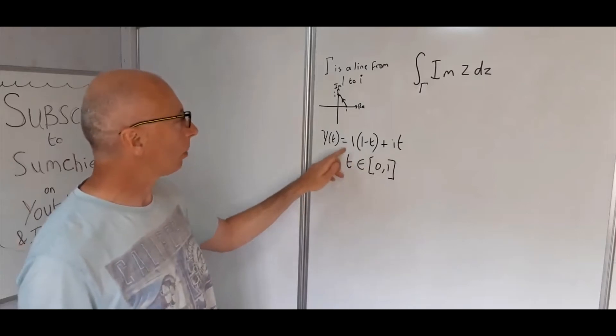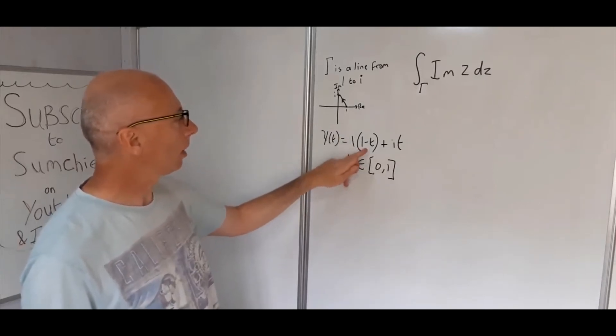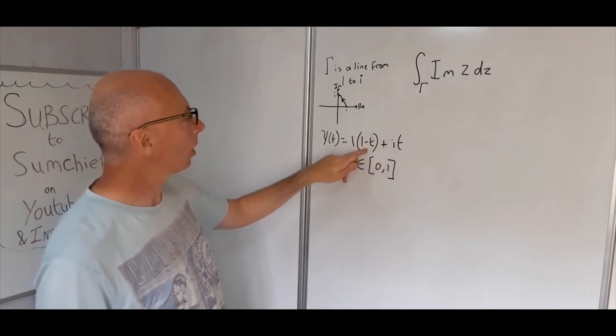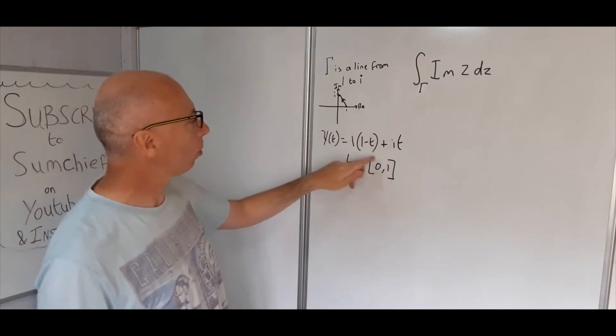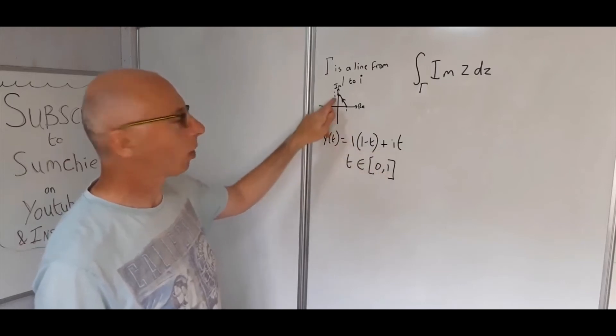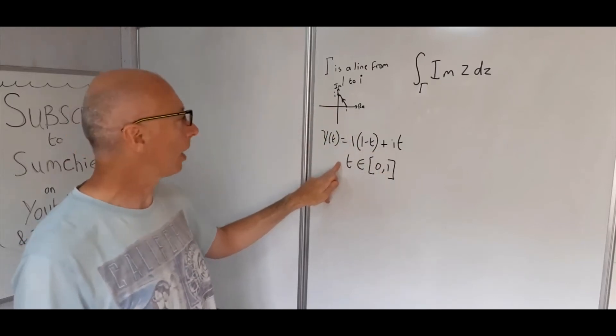If you plug in 0 here, you start off with 1 and 0i at the starting point. Plug in 1, you get 0 plus i, so that's the correct parameterization.